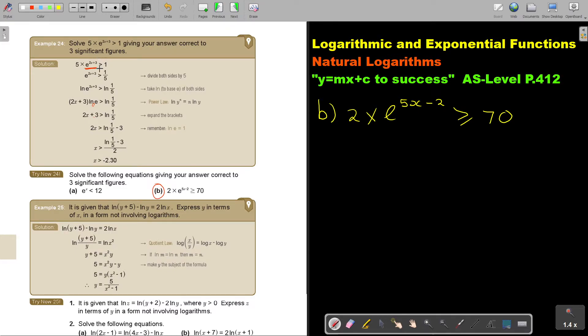Also remember, if there's not an equal sign, just leave it like that. If there's an equal sign, just run with it. So first I divide by 2 both sides. So I get e^(5x - 2) is bigger and equal to 35. Then I'm going to take ln on both sides.